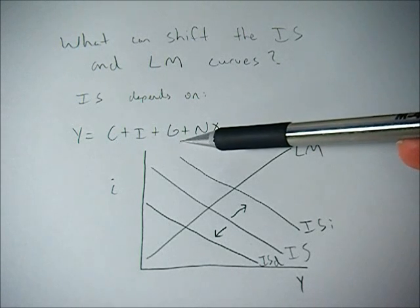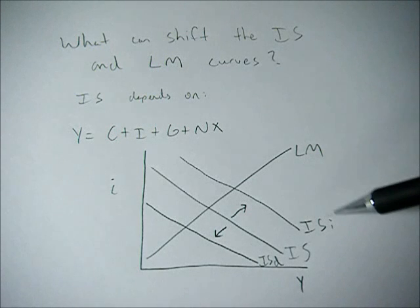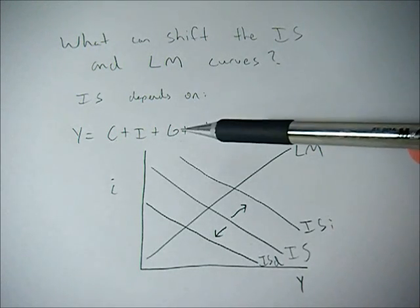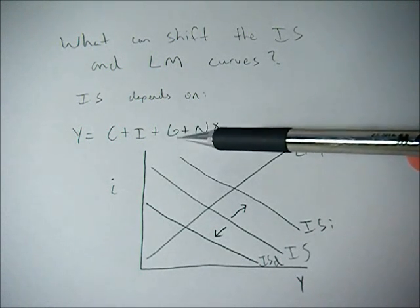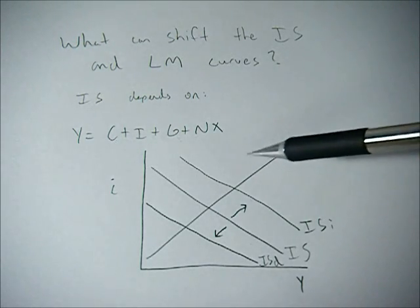Government spending can play a role. Expansionary government policy will increase the IS curve or shift it right, while contractionary government policy, say raising taxes or lowering government spending, is going to decrease the IS curve or shift it left.